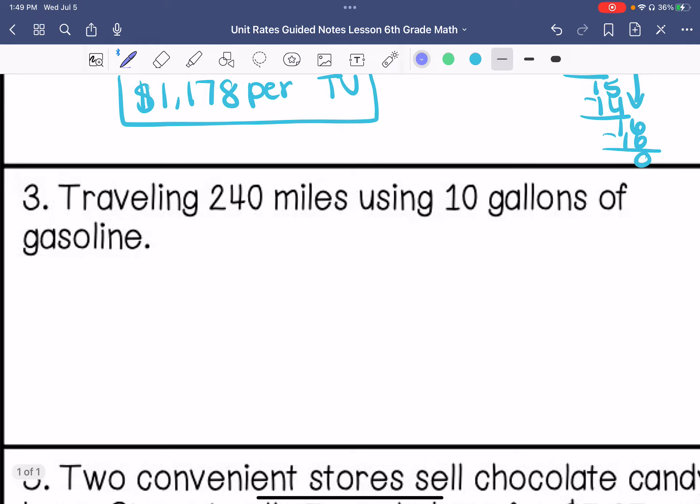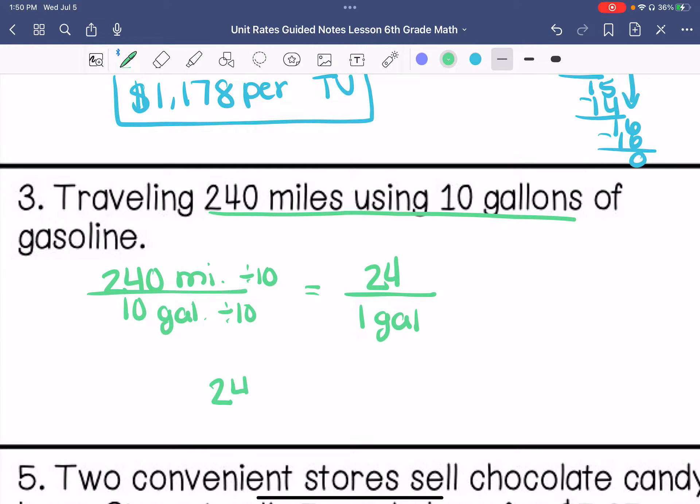Alright, if you are traveling 240 miles using 10 gallons of gas, divide this by 10, divide the top by 10. That gives you 24 miles per gallon.